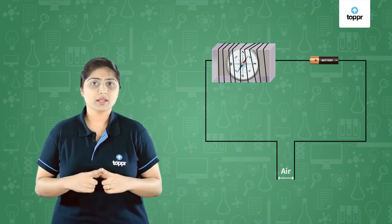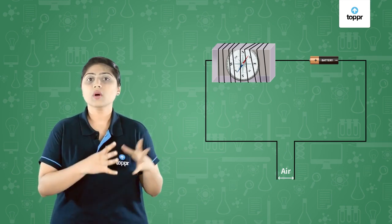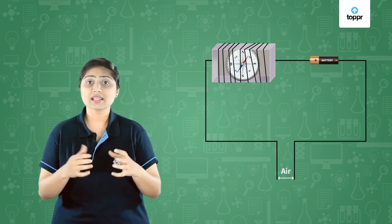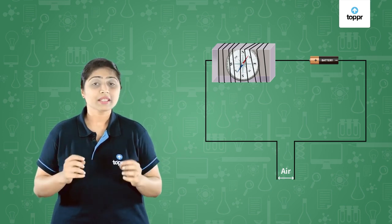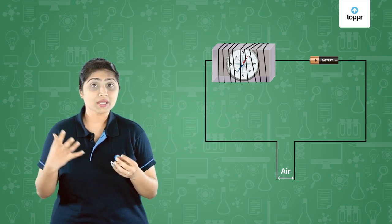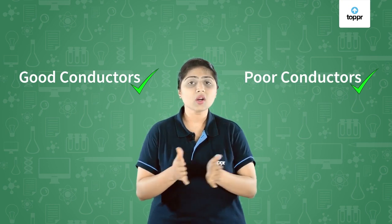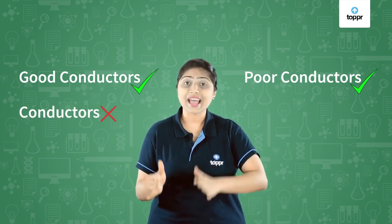Did you notice that I said air is a poor conductor, but I never mentioned that air is a bad conductor or an insulator? Why is that so? Because air conducts electricity during lightning. So air does not conduct electricity under normal conditions, but it can conduct electricity under specific circumstances. This is the reason why we classify substances into good conductors and poor conductors, but we do not classify them as conductors and insulators.